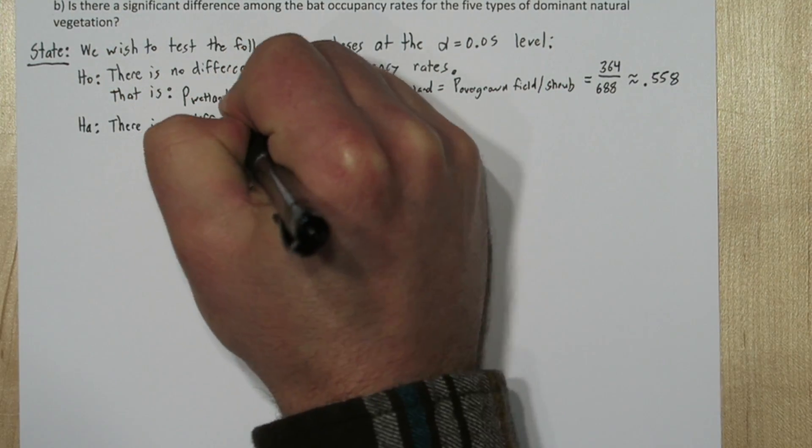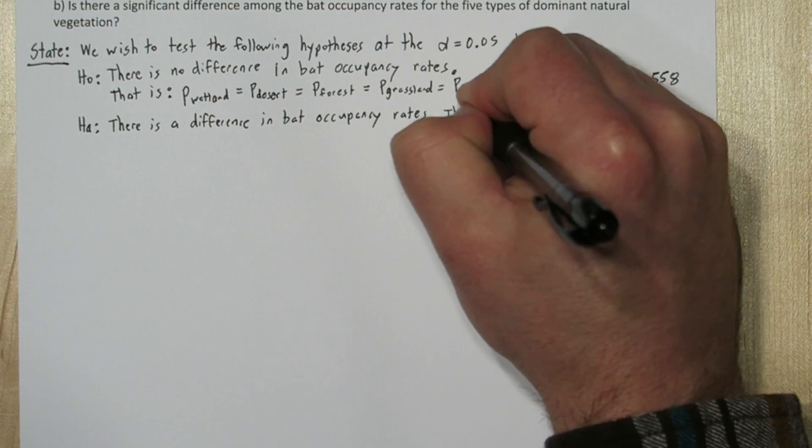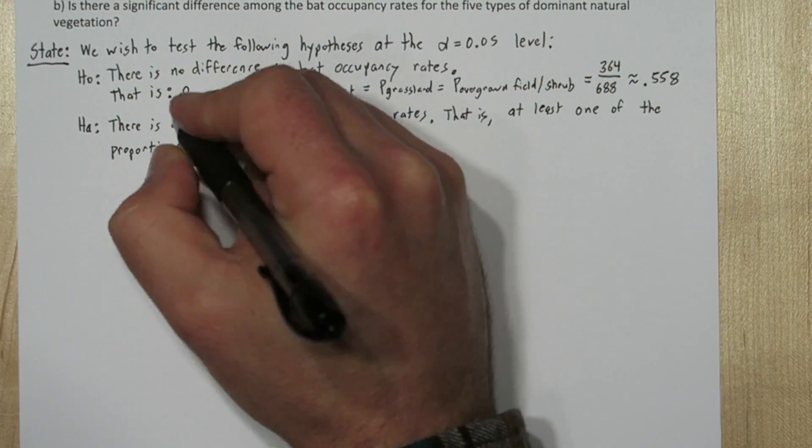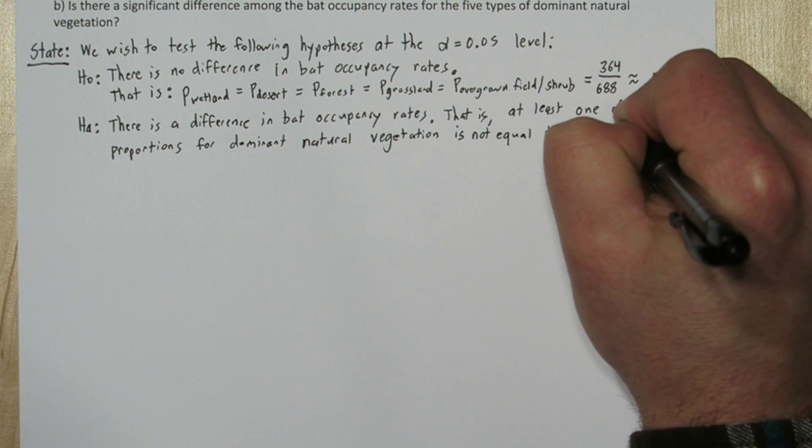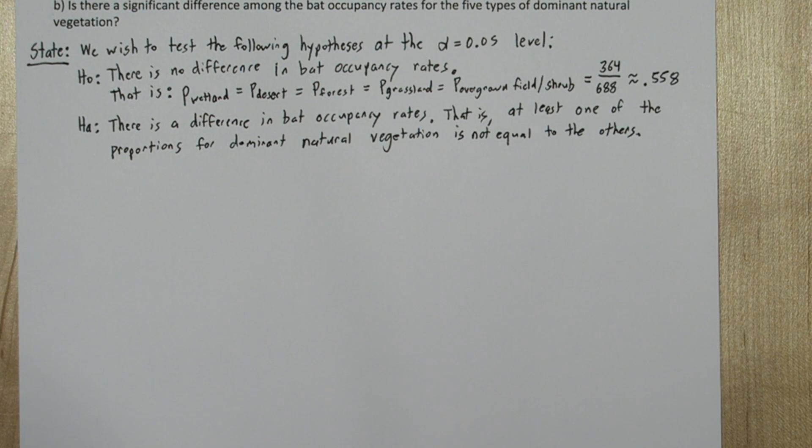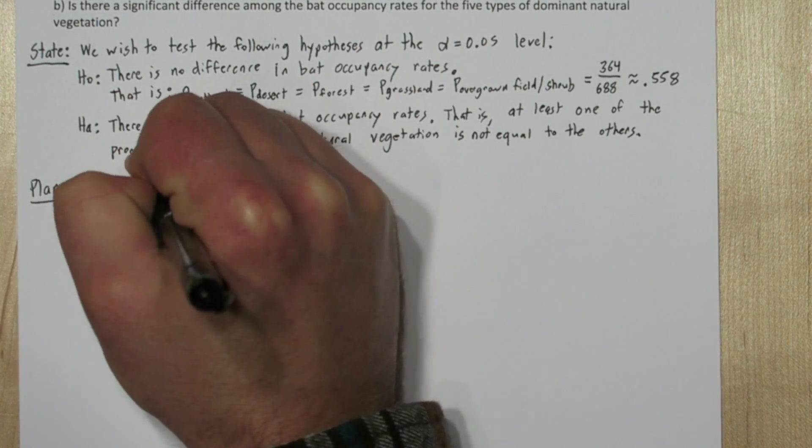Our alternative hypothesis is there is a difference in bat occupancy rates. That is, at least one of the proportions for dominant natural vegetation is not equal to the others. So the status quo of the current model is that all these proportions equal each other, they all equal about 0.558. We're interested in if our sample data gives us evidence that it doesn't fit that model.